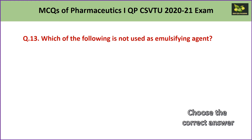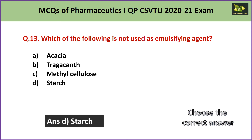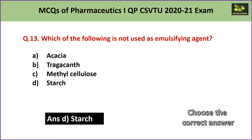Question number 13: Which of the following is not used as an emulsifying agent? A. acacia, B. tragacanth, C. methylcellulose, or D. starch. The answer is D — starch — because except for starch, all the other three are used as emulsifying agents for preparing emulsions.